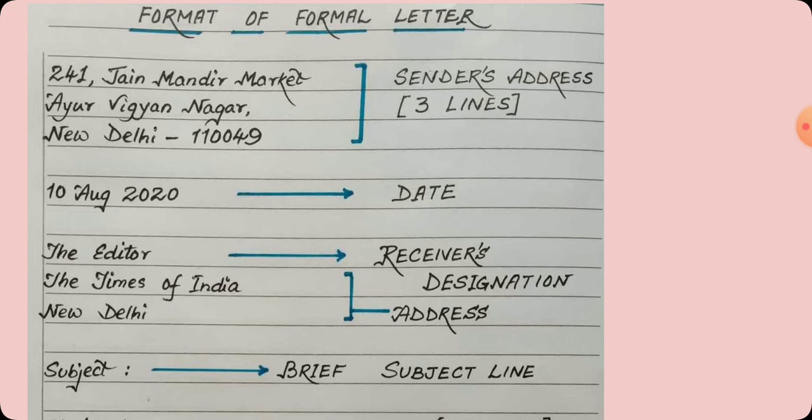After that, we will leave a line gap and mention the date. This date should also be written in the proper format. I have not written 10.08.20 — you will have to write the name of the month in alphabets and mention the full year. That is, instead of 20, you should write 2020.